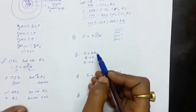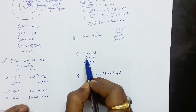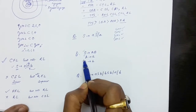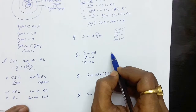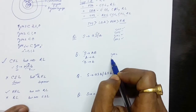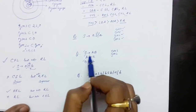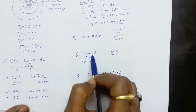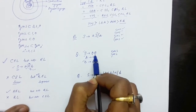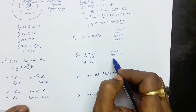Now let's take the next grammar. This grammar has three productions. On the left hand side there is only one symbol, which means it has to be Type 2. Now let us find out if it is Type 3. On the right hand side of this production we have two non-terminals. If you have two non-terminals, obviously it is not Type 3. So this grammar is Type 2.